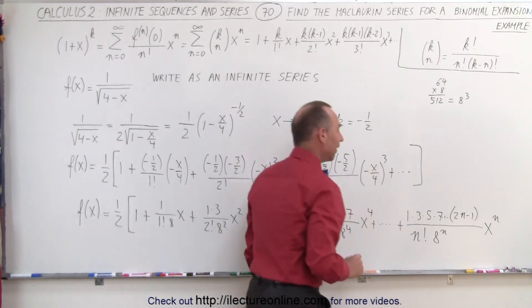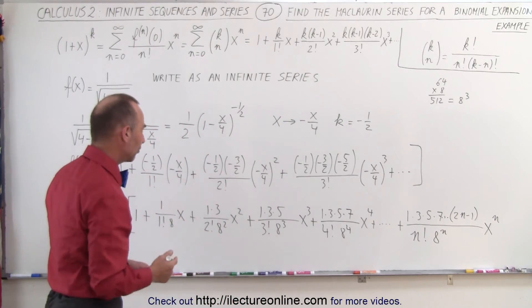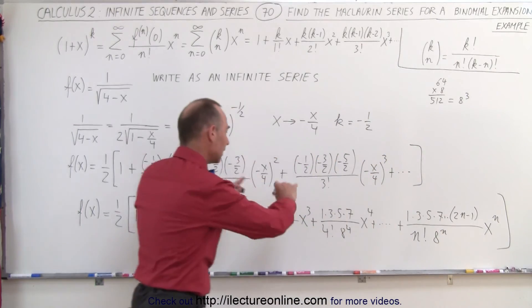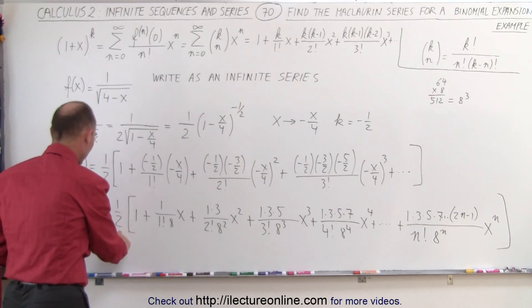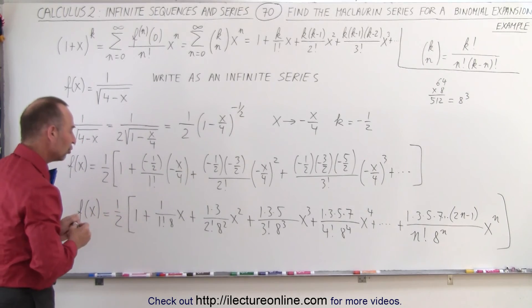And that will be the final term or the nth term of the expansion depending upon how many terms you want to go. And then you take the whole sum multiplied times 1 half and that will then be the binomial expansion or the Maclaurin series expansion of the function f of x equals 1 over the square root of 4 minus x.